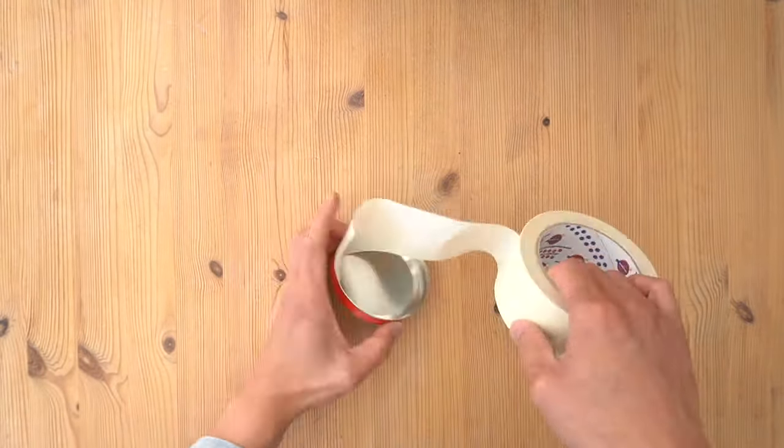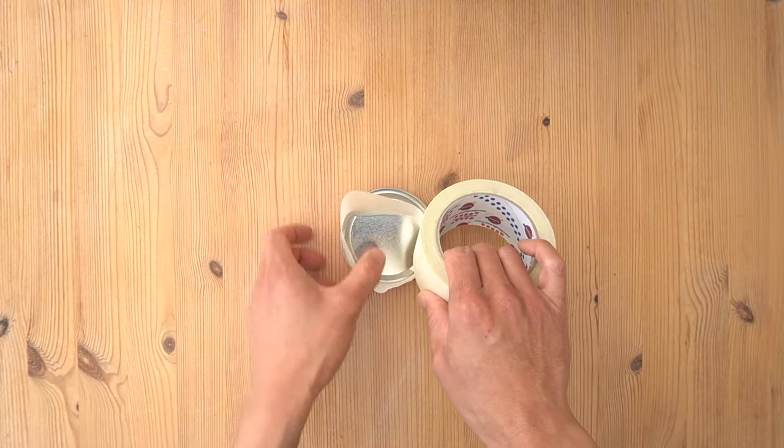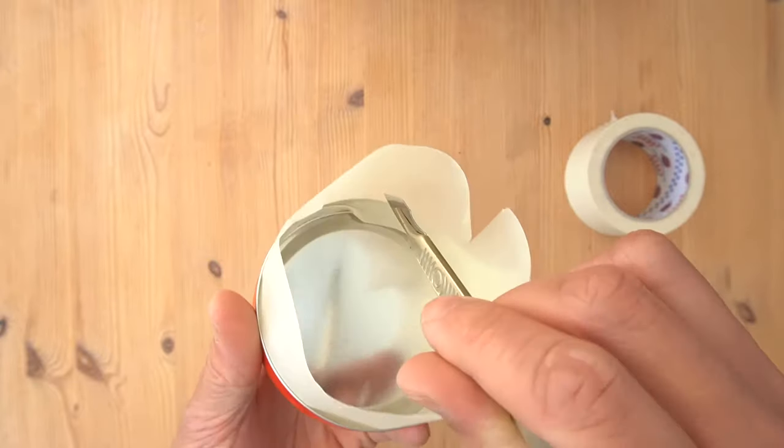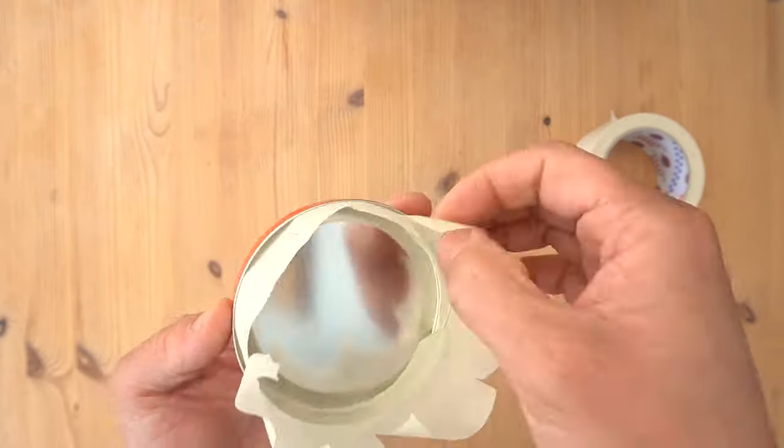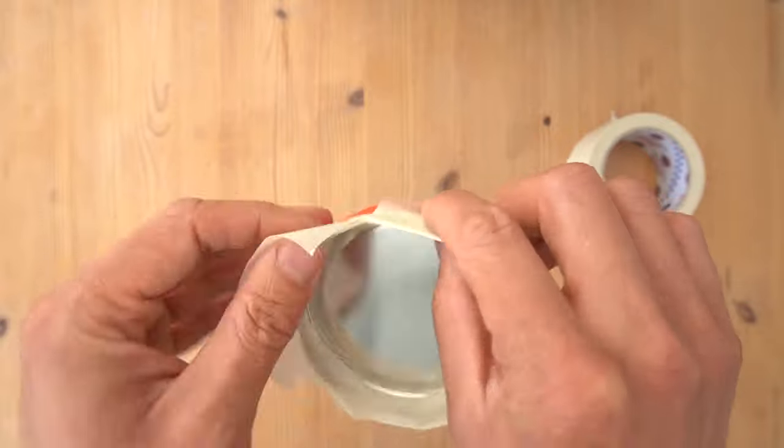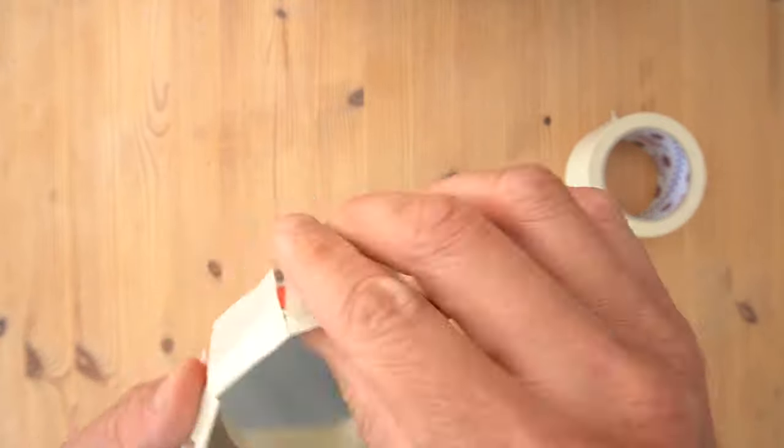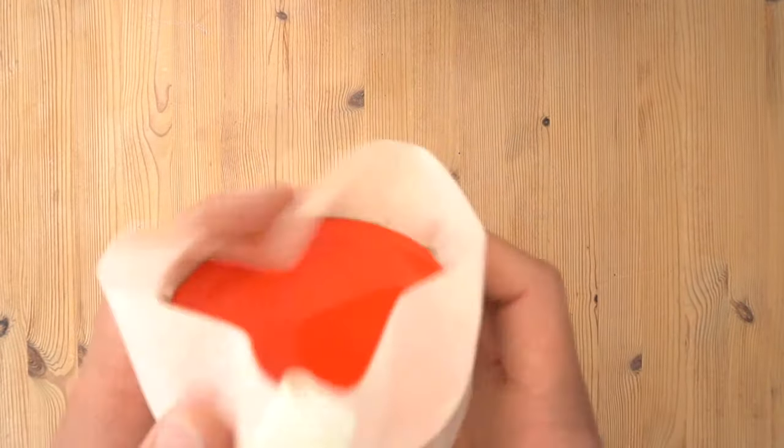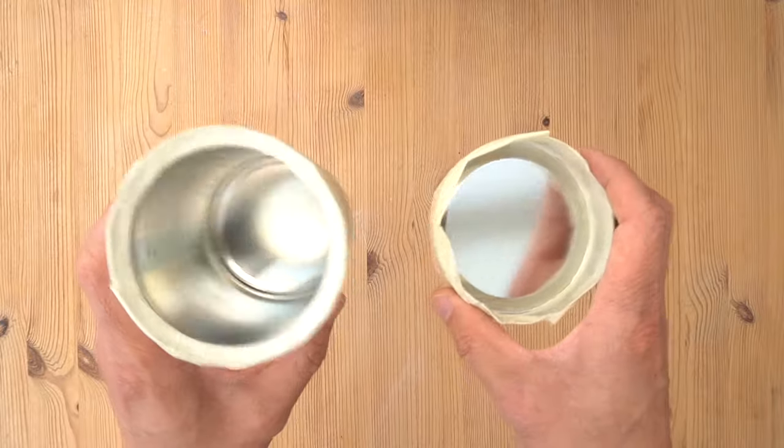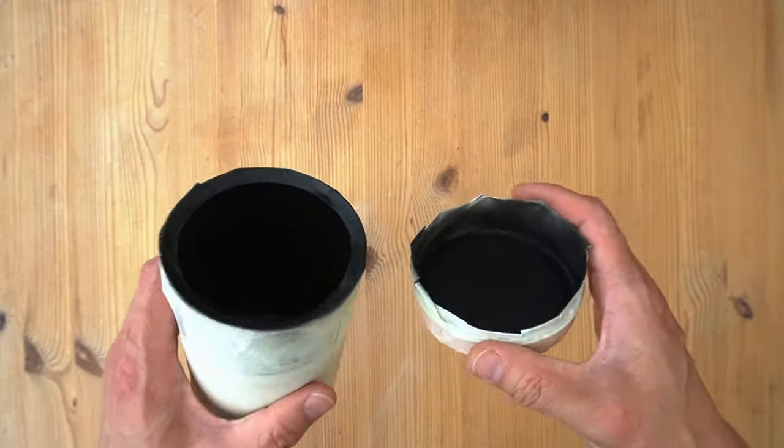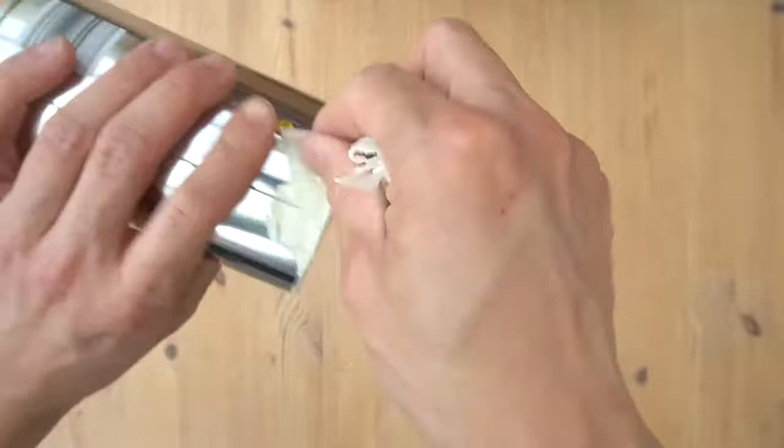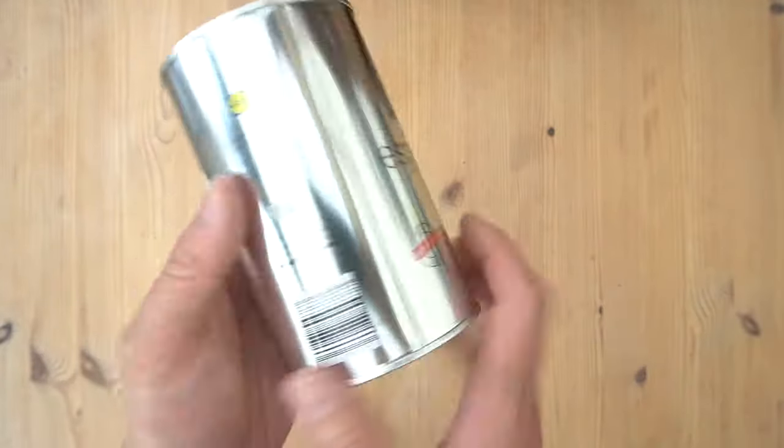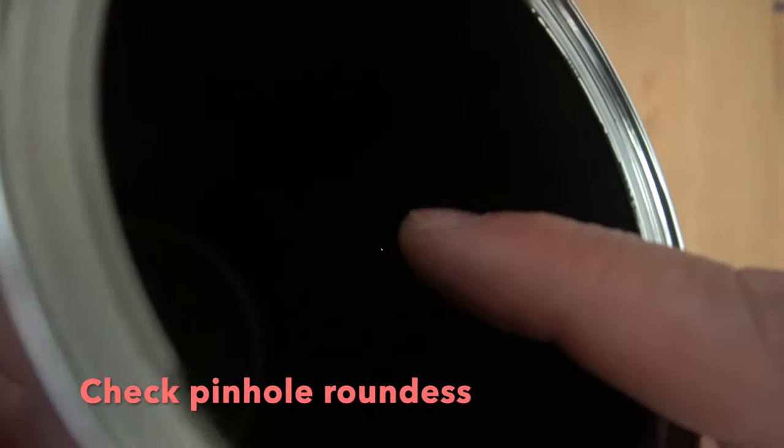I repeated the same process with the lid. It was a little bit trickier because it was on an inner side. I cut little tabs out and then folded them in order to cover the outer areas. Once ready and masked up it was ready for paint. Carefully remove the masking tape and check that hole. It's ready, it's nice and round at 0.8 millimeters.